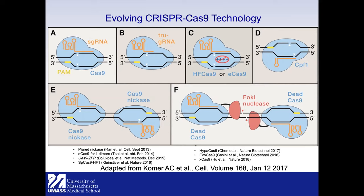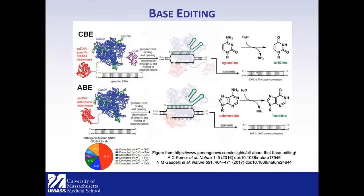A few years ago, another variant was developed called base editing. Rather than making a double-stranded break, it modifies a single base, thereby reducing unintended insertions and deletions. Currently there are two types: CBE (cytosine base editor), which converts C to T (CG to TA), and ABE (adenine base editor), which converts A to T (AT to GC). Base editing has increased specificity and accuracy, but guide design must consider the editing window, typically positions four to eight.